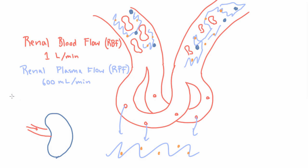If you want to be more precise, you can actually calculate renal plasma flow. It's equal to the renal blood flow times the fraction of blood volume which is plasma, and that is 1 minus something we call hematocrit.